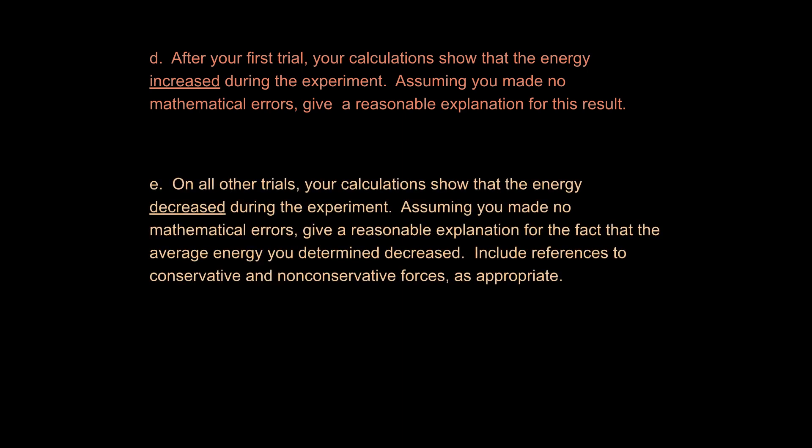And E is a similar idea. So it says, on all other trials, your calculations show that the energy decreased during the experiment. We would expect that because energy is going to be leaving the system from a non-conservative force. Assuming you made no mathematical errors, give a reasonable explanation for the fact that the average energy you determined decreased. Whenever you see non-conservative forces, I want you to think friction. Just think friction, because for our purposes, that's what we're talking about. In other words, the total amount of energy is not conserved if friction is significant. So you have a certain amount of energy and some of that energy is converted from potential into kinetic as the thing slides down or moves across the table. But some of that energy is lost. And that's what we mean with a non-conservative force. That loss of energy is the energy lost to the environment, mostly as friction. Could be a little bit of heat as well, but basically it's going to be friction.